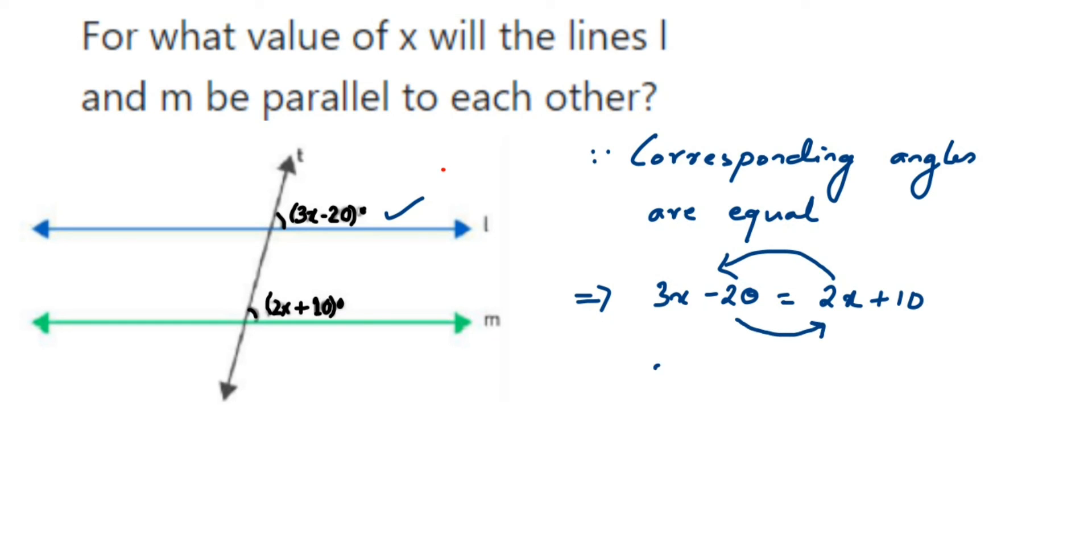This will become 3x - 2x, and -20 will become +20 when you transpose. 3x - 2x is x, and this equals 30. That's it - the value of x will be equal to 30.